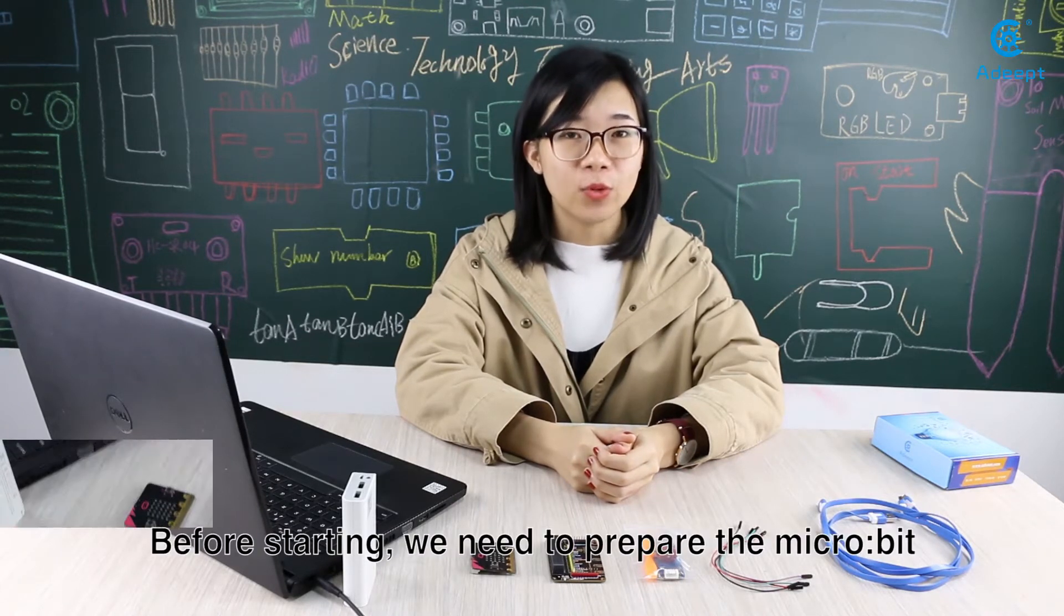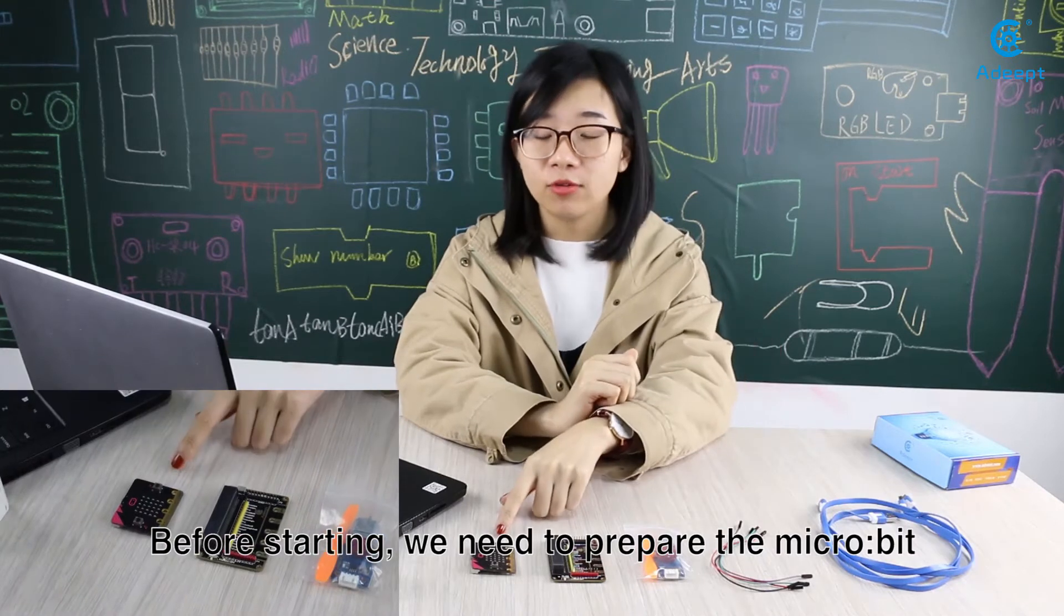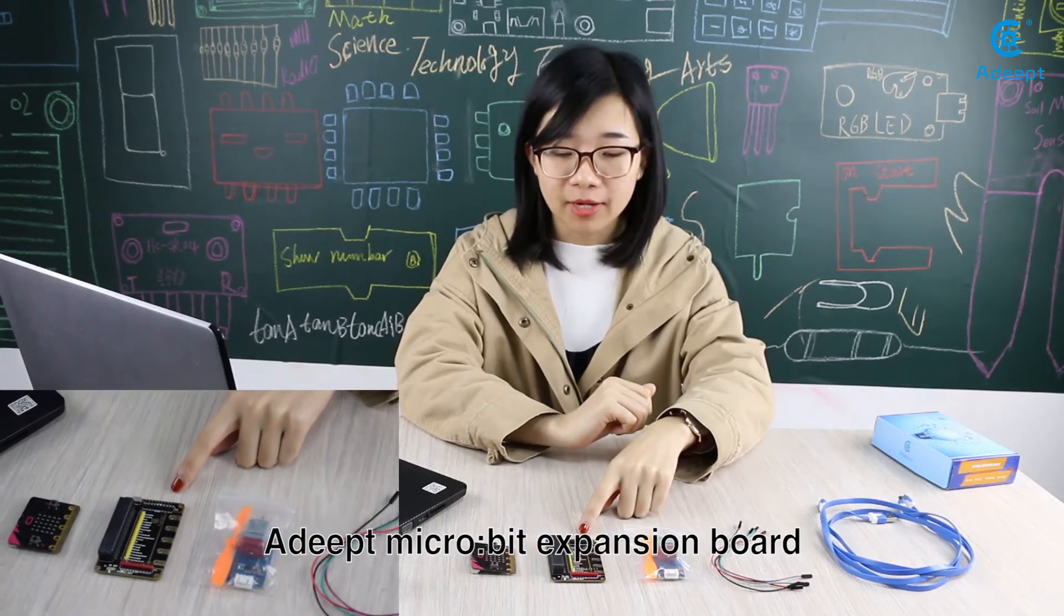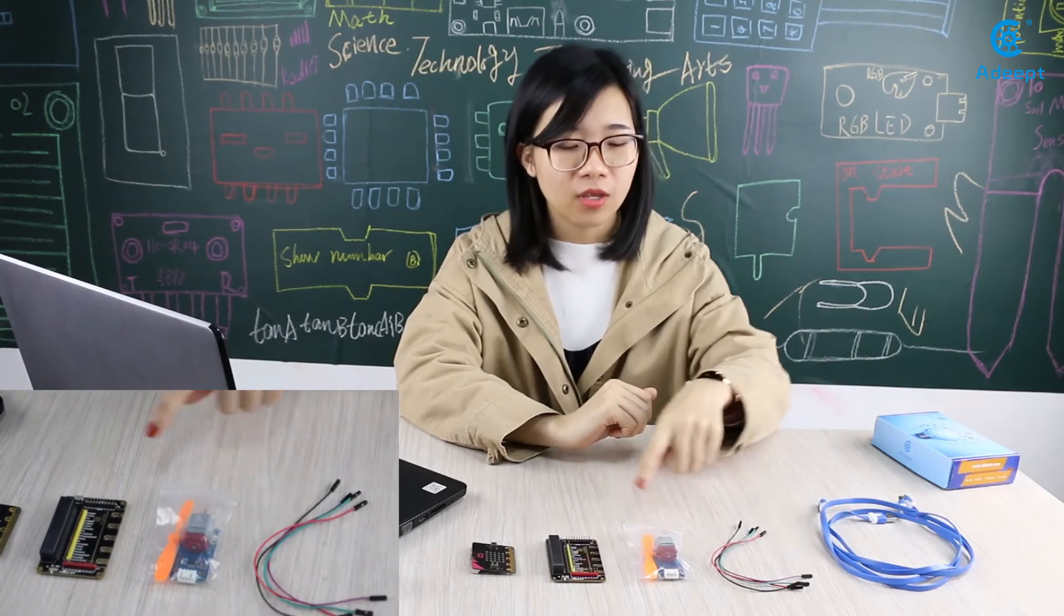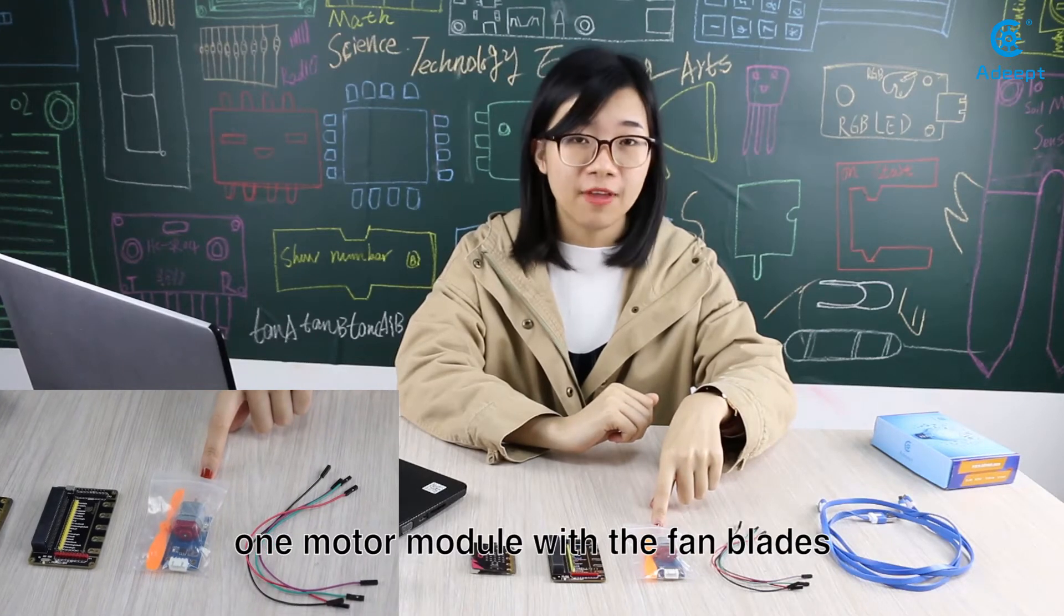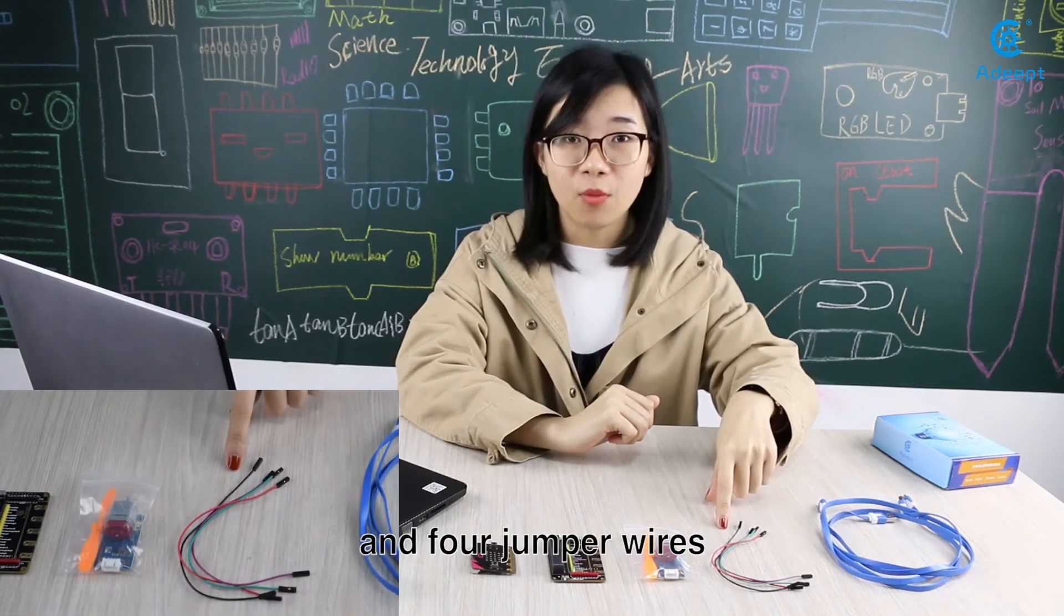Before starting, we need to prepare the micro:bit, Adip micro:bit expansion board, one motor module with fan blades, and 4 jumper wires.